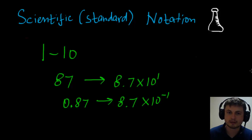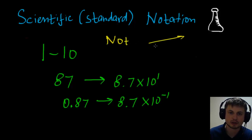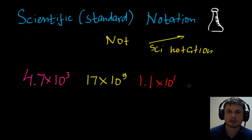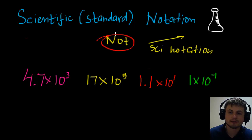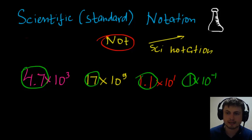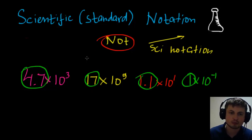If a question asks which of these is NOT scientific notation, and gives choices like 4.7 × 10³, 17 × 10⁹, 1.1 × 10¹, and 1 × 10⁻¹ — check the leading number. 4.7, 1.1, and 1 are all between 1 and 10, so those are valid. But 17 is not between 1 and 10, so 17 × 10⁹ is not scientific notation. It should be rewritten as 1.7 × 10¹⁰.